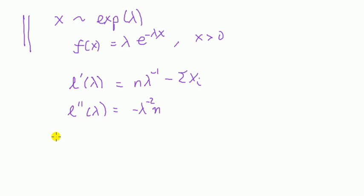Now I want to calculate the second derivative: L''(λ) = -nλ^(-2). Then we can see from this that the information number is equal to minus the expectation of this.